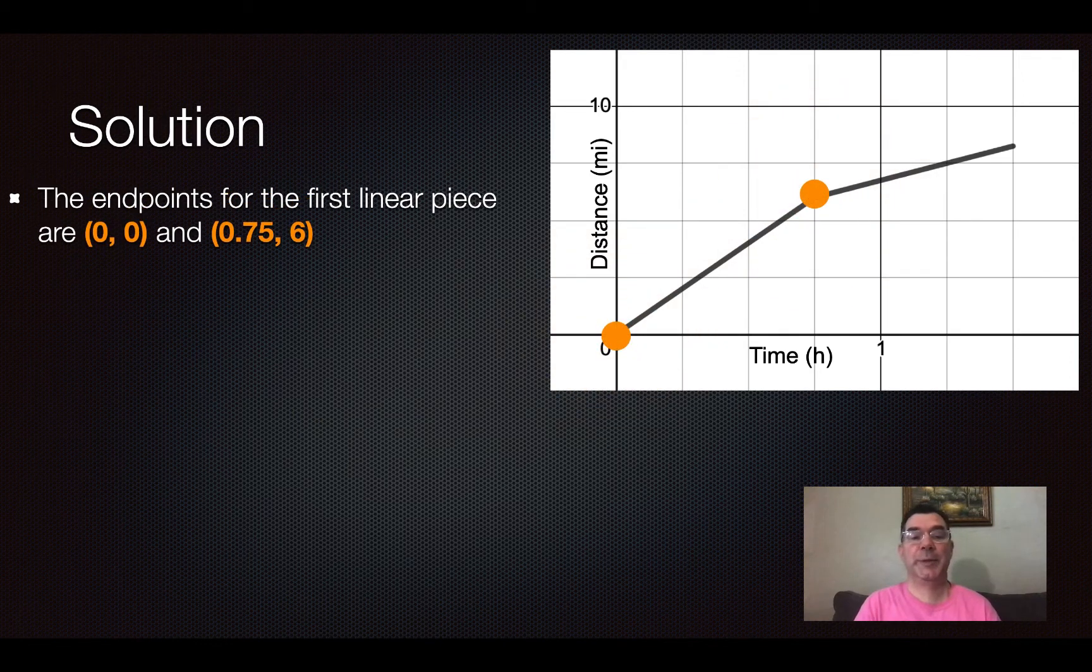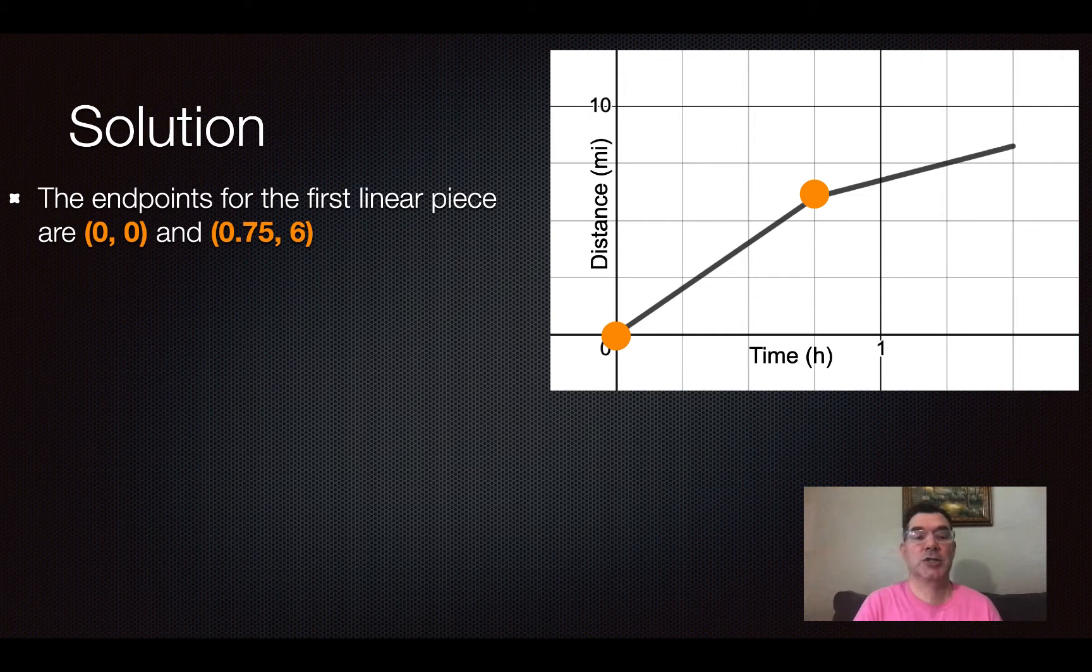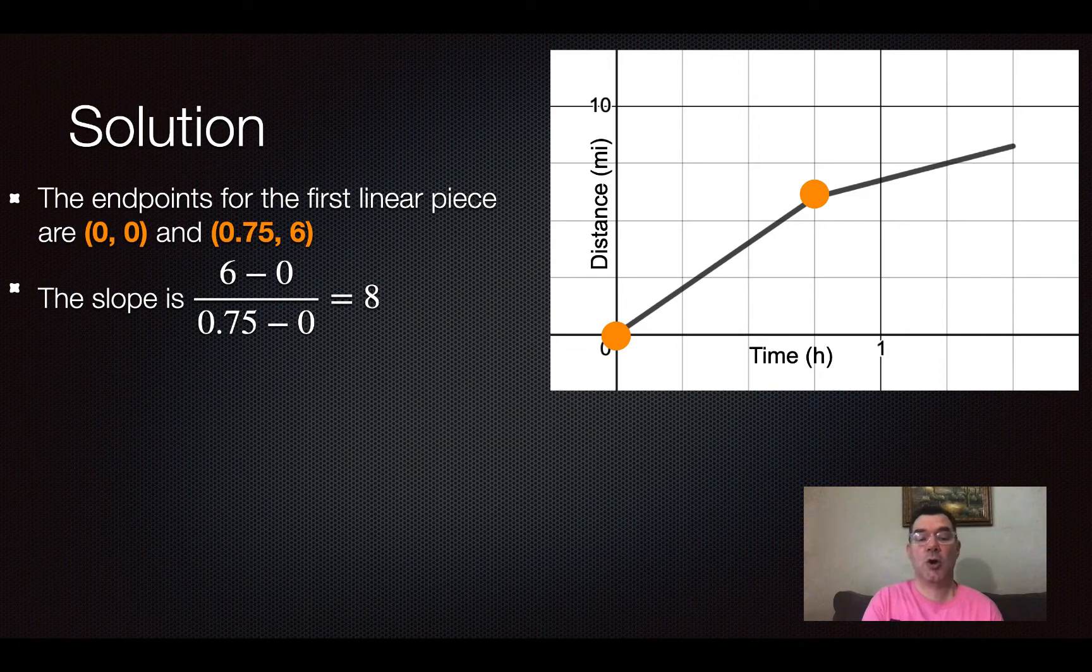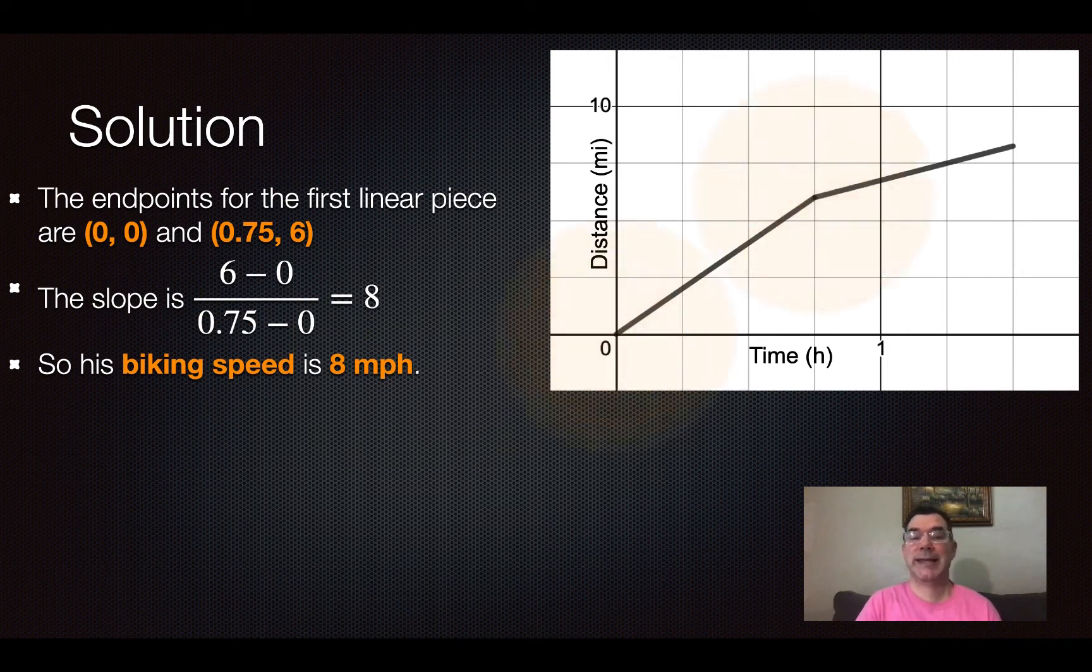The endpoints for the first linear piece where I'm assuming he was cycling are (0, 0) and (0.75, 6). The slope between those is the change in y over the change in x which is 6 over 0.75 and that is 8. So his biking speed is 8 miles per hour.